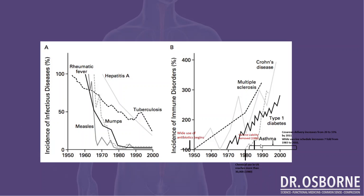One other element: chemical use in the US by 1980 reaches more than 30,000 different chemicals. So what do we have? A dramatic drop in infectious disease, and in the same timeframe a dramatic increase in autoimmune disease — simultaneously with the use of antibiotics, massive vaccination policy, increased cesarean delivery, and chemical use reaching 30,000. Taking all those things into consideration, let's take a brief jaunt through history.